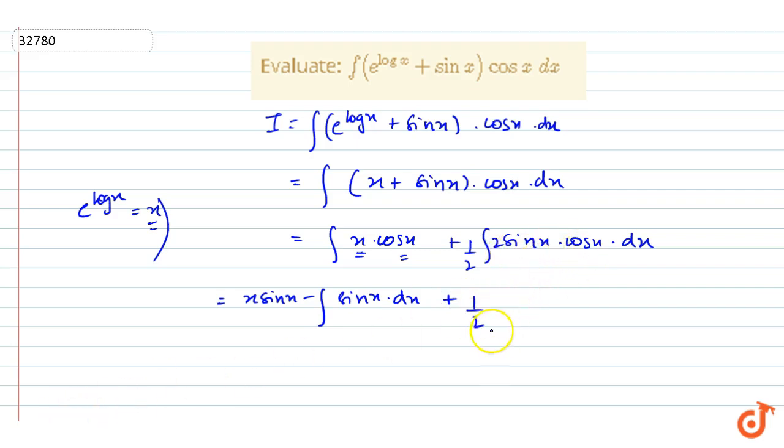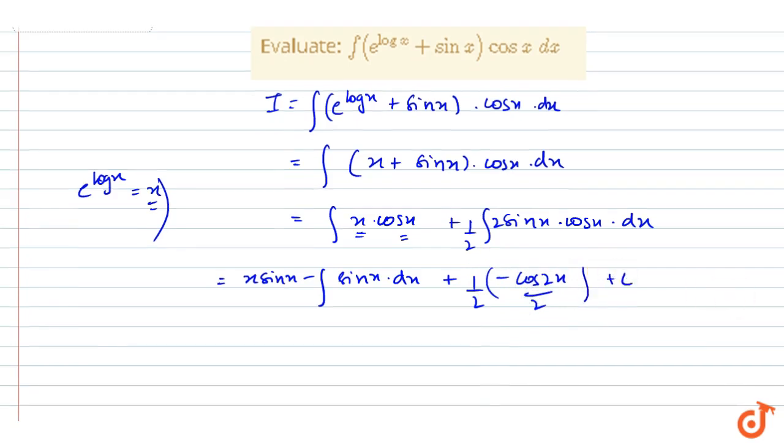Sin 2x integration will give us minus cos 2x by 2 plus c. And sin x integration will give us minus cos x.